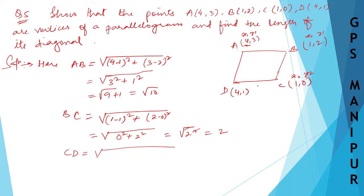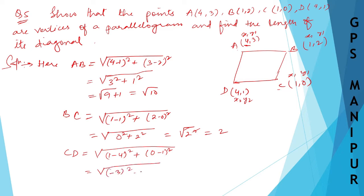Now we need to find CD. Taking C as (x1,y1) and D as (x2,y2), CD equals root over (1 minus 4) squared plus (0 minus 1) squared, which is root over (minus 3) squared plus (minus 1) squared, giving us root over 9 plus 1, equal to root 10.